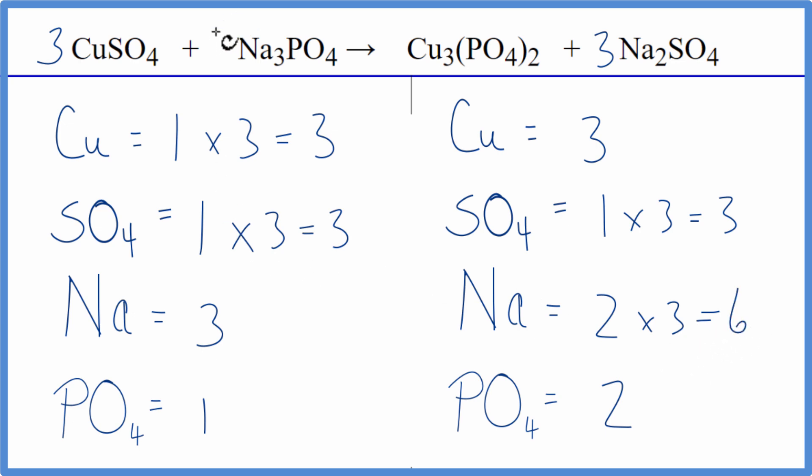But that's okay. If we put a coefficient of two in front of the sodium phosphate, three times two, that gives us six. That's balanced. And this two applies to everything here. So if our one phosphate times the two gives us two of those, and we're done. This equation is balanced.